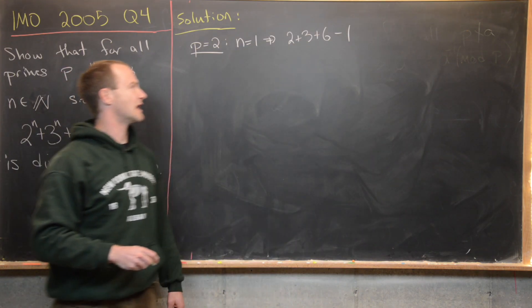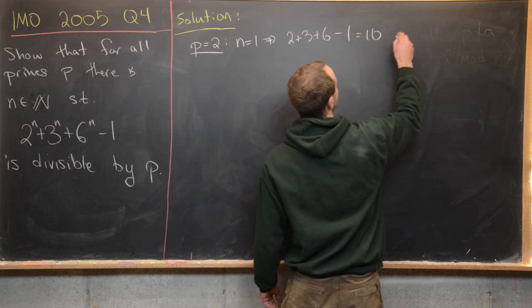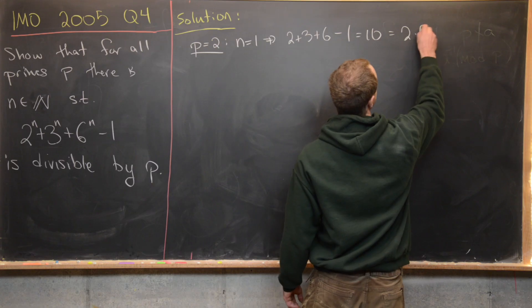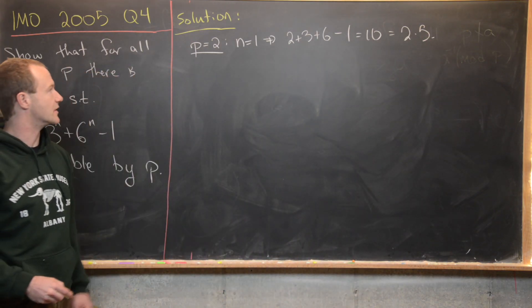That's going to be 11 - 1, which is 10, but 10 is equal to 2 times 5, in other words it's a multiple of 2. So we're good to go there.